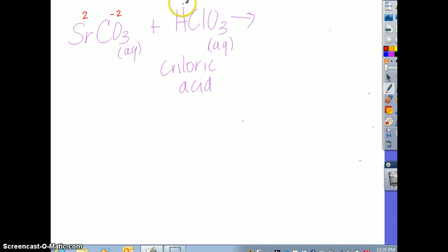Strontium is 2, carbonate negative 2. Hydrogen 1, chlorate negative 1. So now I know the outside ions come together. The strontium will go with the chlorate. And I will crisscross. So that 2 is coming across. The 1 is already there.